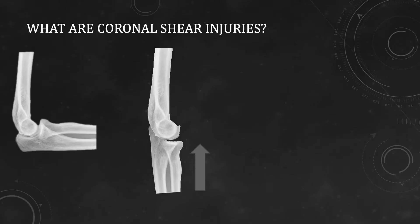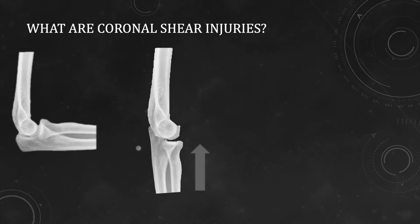So what are coronal shear injuries? Any force that is applied tangentially to the articular surface — whether the force is tangential in this direction or another — will be a shear force. When the fracture occurs in the coronal plane, for example in the humerus, any fracture occurring in the coronal plane due to shear force applied tangential to the articular surface will result in coronal shear injuries.